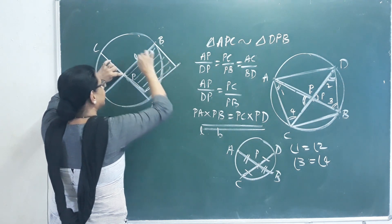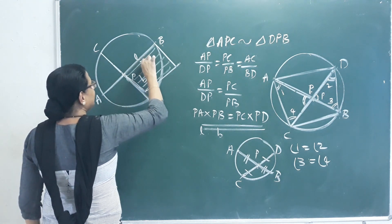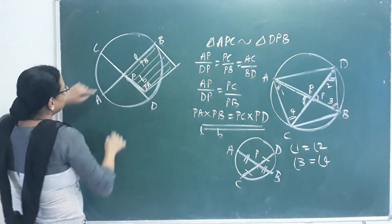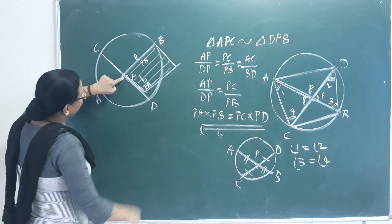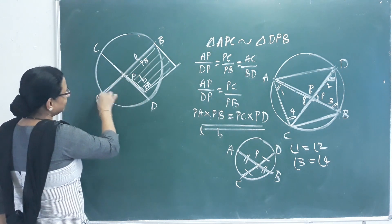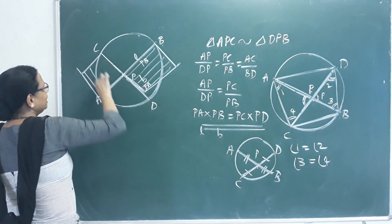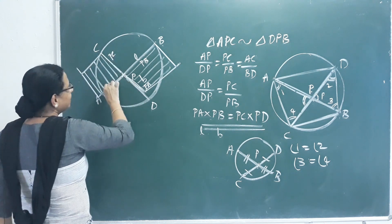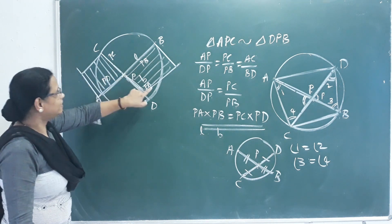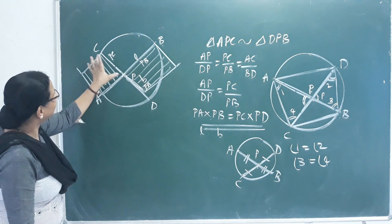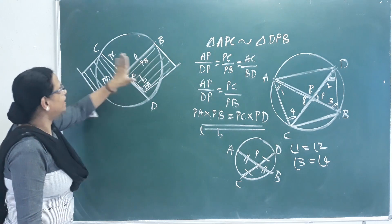PA is the length and PB is the breadth. Multiply PA × PB. Then PC and PD are equal to the other rectangle's length and breadth. We put PC and PD together. PA × PB = PC × PD means we have two rectangles with the same area. If you cut this chord, one length equals the other length, so we have two rectangles of the same area.